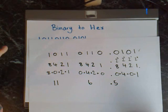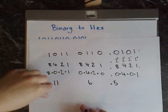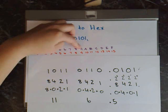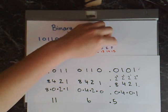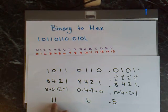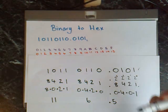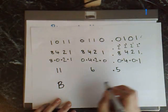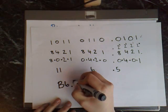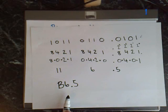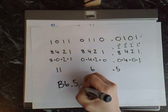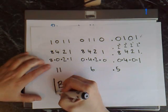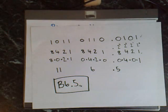We're almost at the final answer, but we need to fix this 11, because the hexadecimal number system doesn't have 11 in it. As you can see it starts at 0, goes to 9, and then it goes A, B, C, D, E, F. So 11 in hexadecimal equals B — we need to change this to a B. Then we can just write our other digits with it: 6 and 0.5. This is now in hexadecimal form, and you just write a subscript 16 at the bottom — a miniature 16. The final answer is B6.5₁₆.